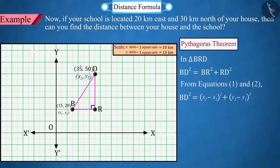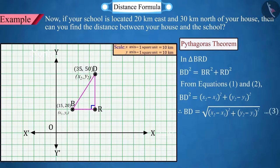From equation 3, that is, the distance between the point B, x1, y1 and point D, x2, y2, BD equals square root of the square of x2 minus x1 plus the square of y2 minus y1 which is called the distance formula.